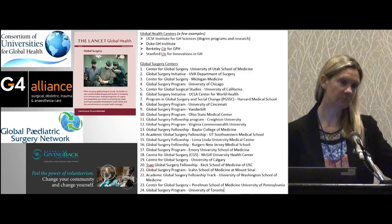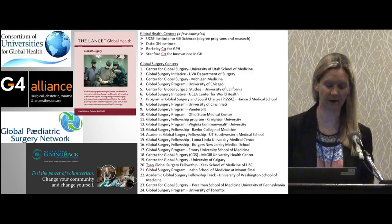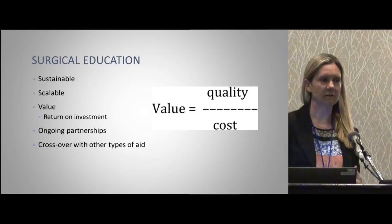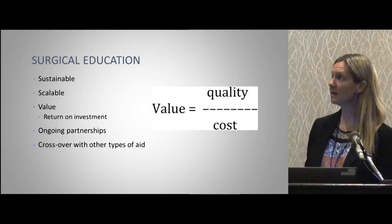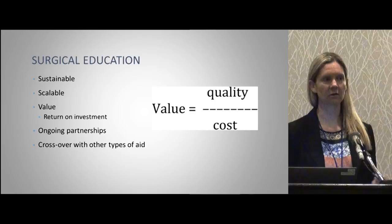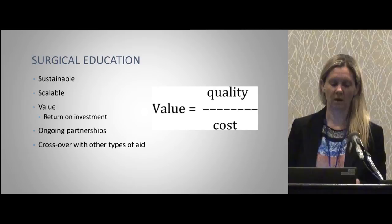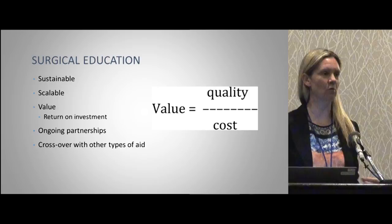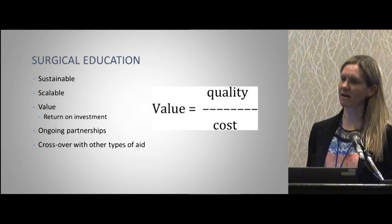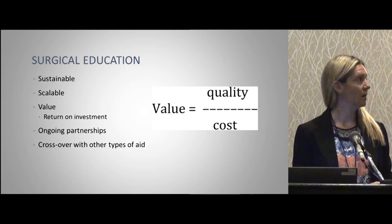Let's talk about the big three: education, research, and systems development. Surgical education is actually pretty easy to provide — I teach here all the time, I can go teach somewhere else. It's sustainable: I teach someone, they teach someone else. It's scalable: I teach five people, they each teach five more, now we have twenty-five. Sending someone to teach is much cheaper than sending supplies or fancy equipment like radiation oncology machines. You get a lot of bang for your buck and a good return on investment. It leads to ongoing partnerships and crosses over with other types of aid — you can operate and teach at the same time.